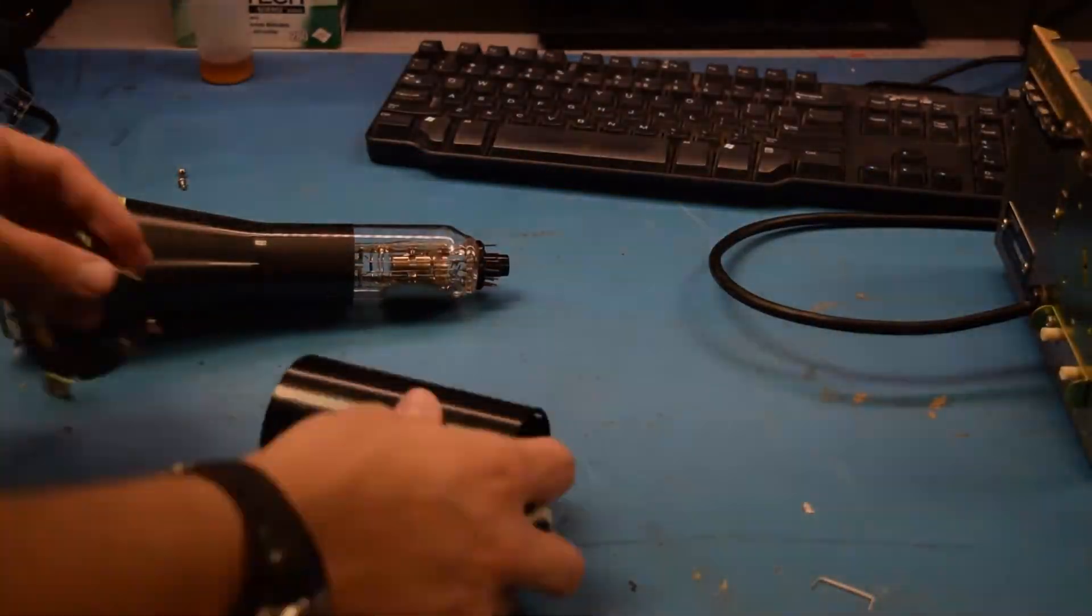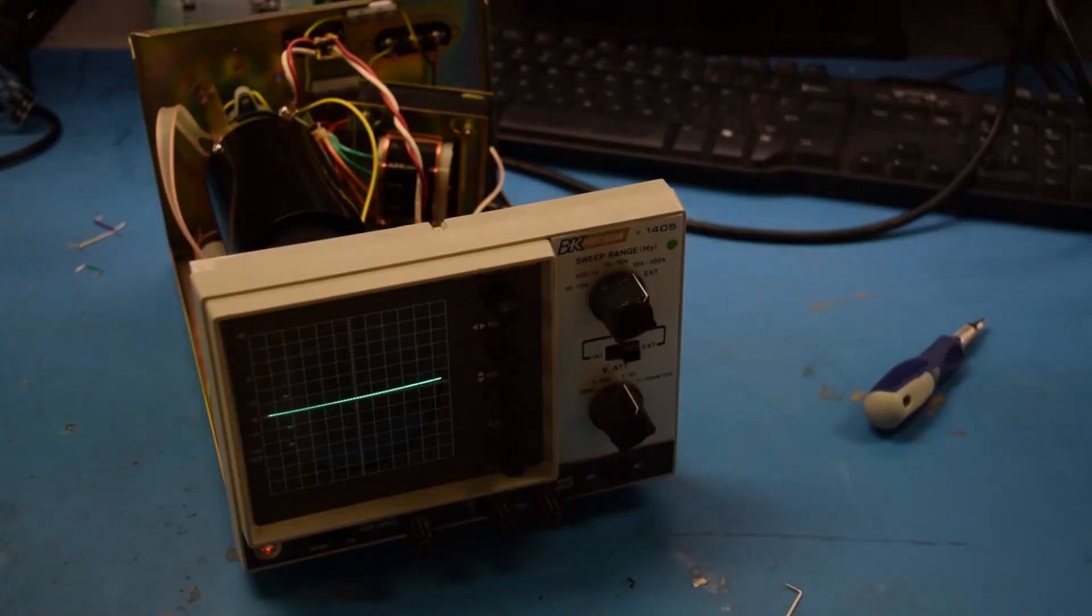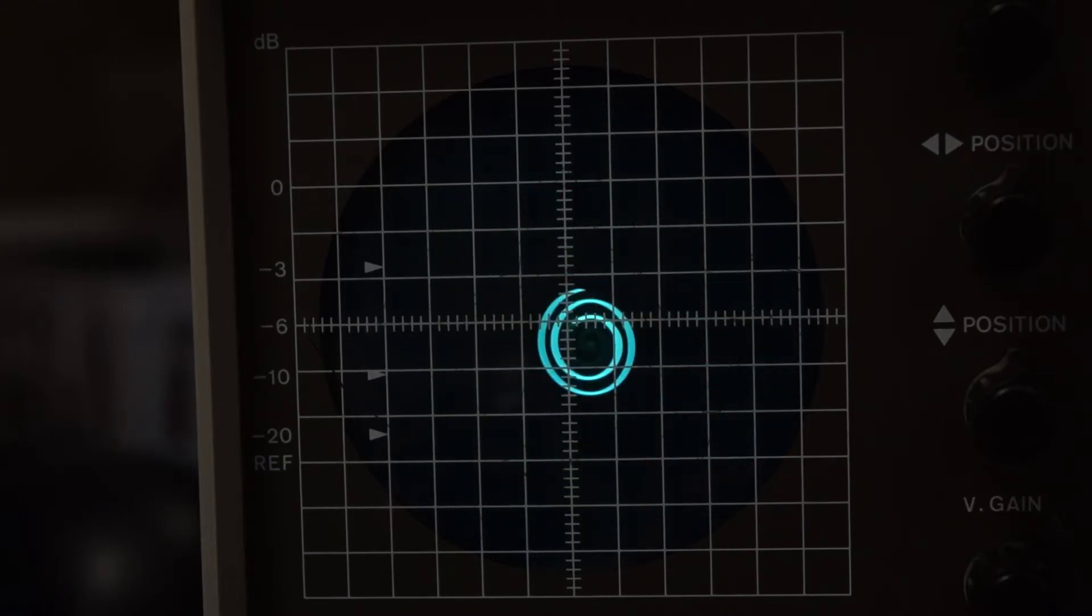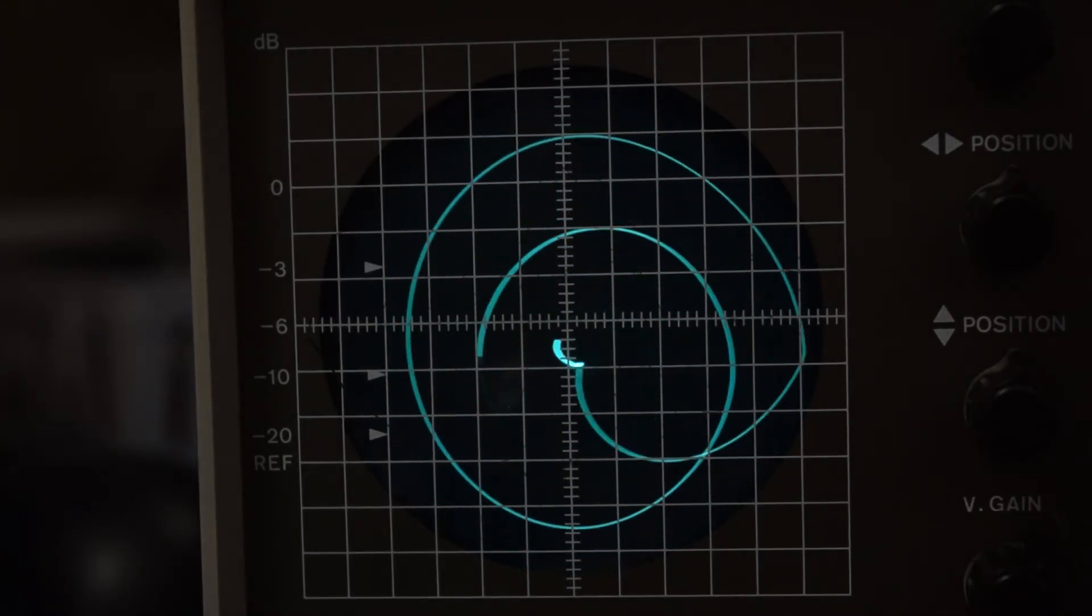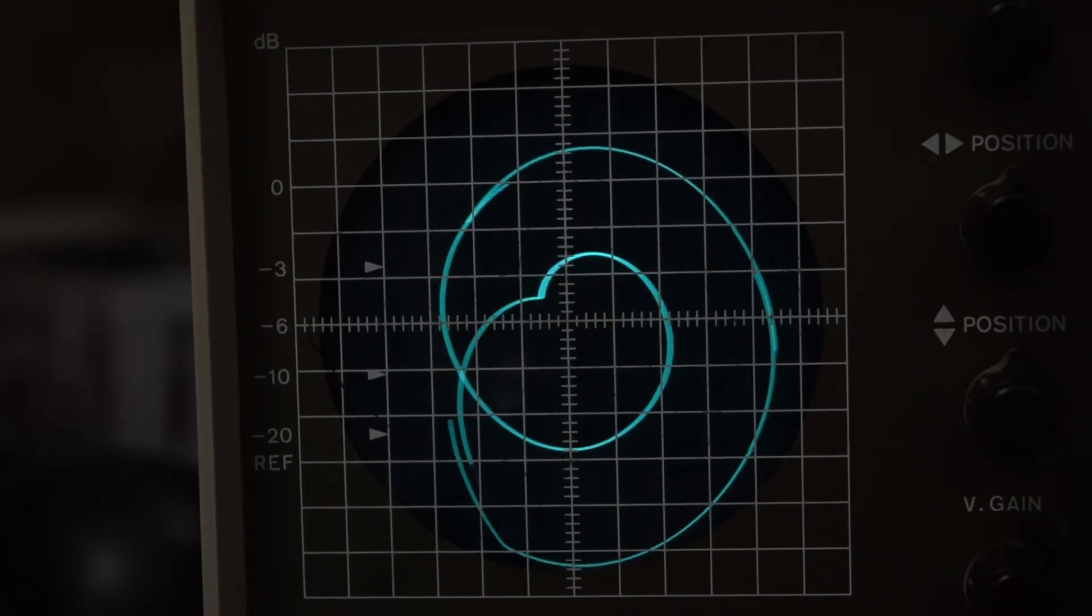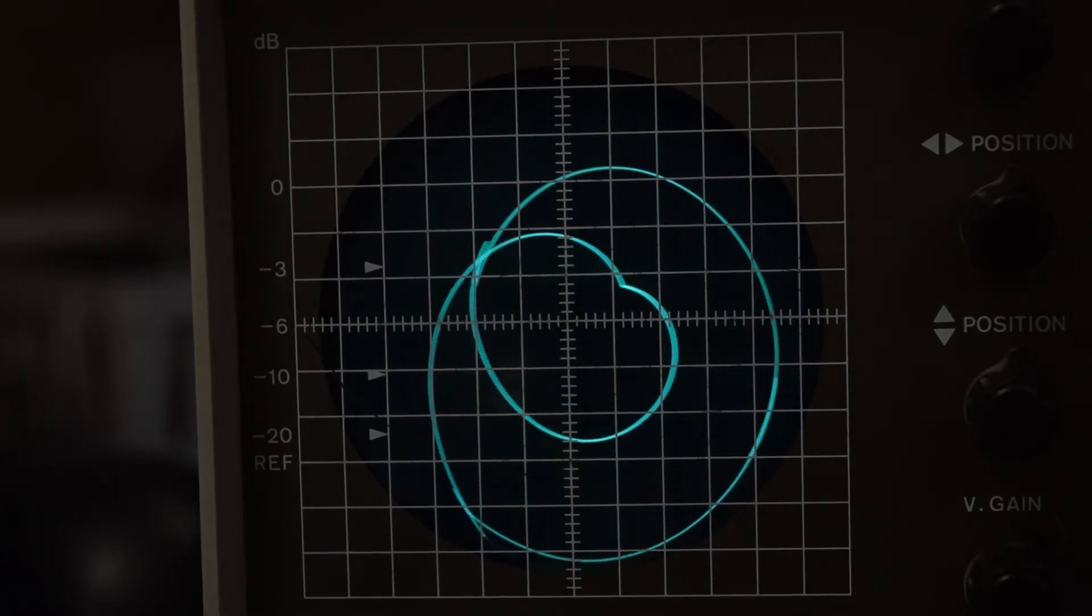So now that we understand how this cathode ray tube works, we can go ahead and reassemble the oscilloscope and ensure that it's working properly. So now let's have some fun with this CRT. What's cool about this oscilloscope is that it allows us to individually control the vertical and horizontal deflection of the beam like I described earlier. In this way, we can input a function for the x and y coordinates of the beam, and the output acts like a parametric function.